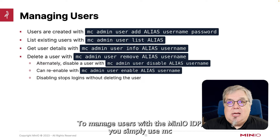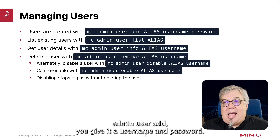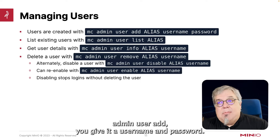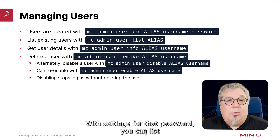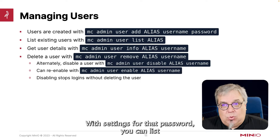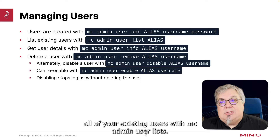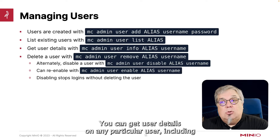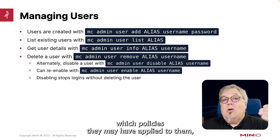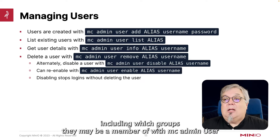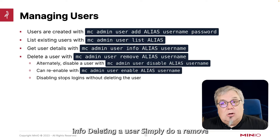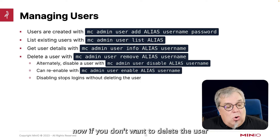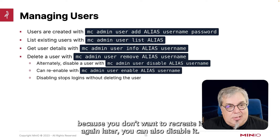To manage users with the MinIO IDP, you simply use mc admin user add. You give it a username and a password. The password has to be at least eight characters long, but that's really about all there is to it with settings for that password. You can list all of your existing users with mc admin user list. You can get user details on any particular user, including which policies they may have applied to them and which groups they may be a member of, with mc admin user info. To delete a user, simply do a remove. If you don't want to delete the user because you don't want to recreate it again later, you can also disable it.